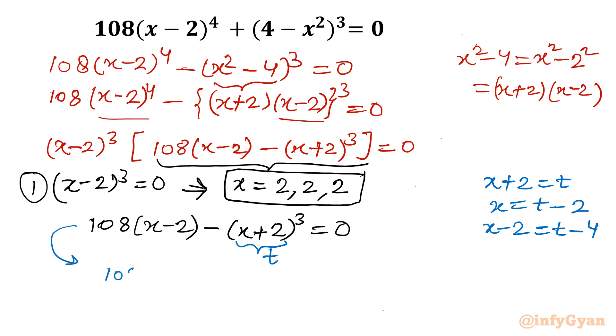This equation will convert into 108(x-2), so I will write 108(t-4) minus t³ equals 0. Let me open this.